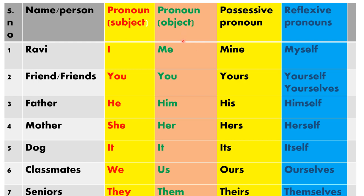Some words can be placed in the object place: me, you, him, her, it, us, and them. These are words used in place of a noun, but in a different location of a sentence — that is the object place. So these are called objective pronouns.